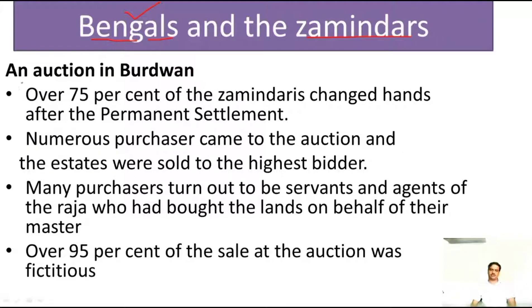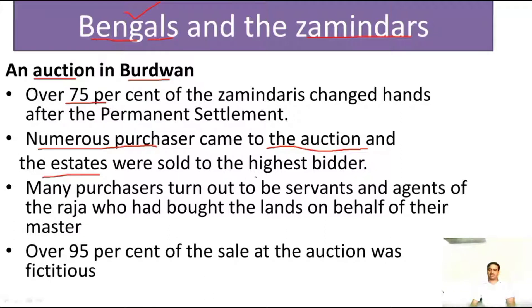The chapter begins with the auction held at Burdwan, a district in Bengal. At that time, 75% of Zamindaris in Bengal were sold by the company at auction because the Zamindars were not able to pay revenue. Numerous purchasers used to come to these auctions, and the estate was generally given to the highest bidder who paid the highest amount, and he was given that Zamindari of the area.